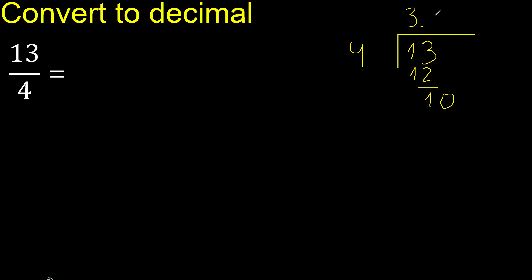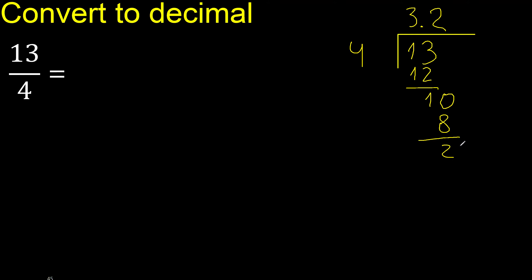4 multiplied by 3 is 12, which is greater. 4 multiplied by 2 is 8. Subtract: remainder is 2.